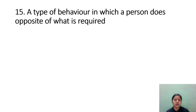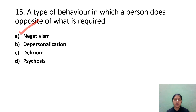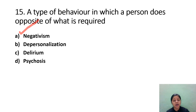A type of behavior in which a person does the opposite of what is required: Option A: Negativism. Option B: Depersonalization. Option C: Delirium. Option D: Psychosis. The correct answer is Option A, Negativism. Passive negativism is when a person simply does not do what is asked.